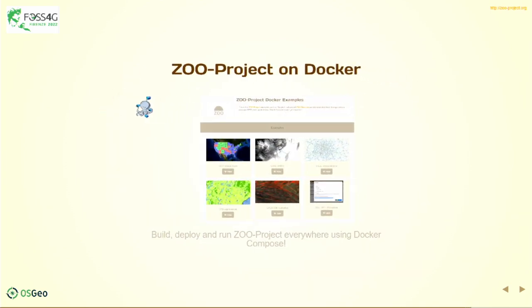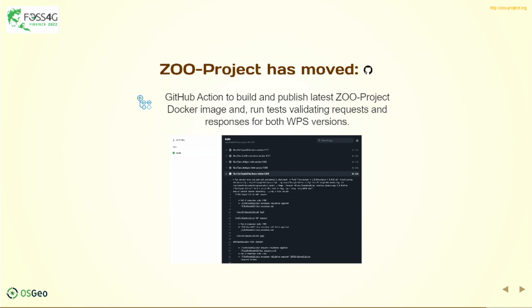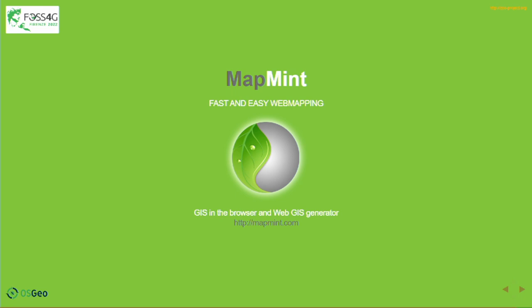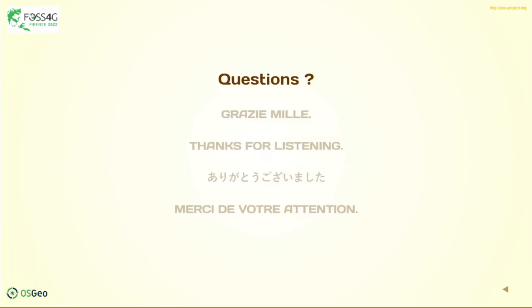For about a year the project has been running on Docker, meaning you can deploy it on any computer quite easily and quickly. You can also reuse the container and binary Docker image to run it on a Kubernetes cluster. We moved to GitHub two years ago and now also have some automated testing. Here is the MS4W package — I would like to thank Jeff McKenna for the work in integrating the ZOO project to make it run on Windows. Thank you for your time.